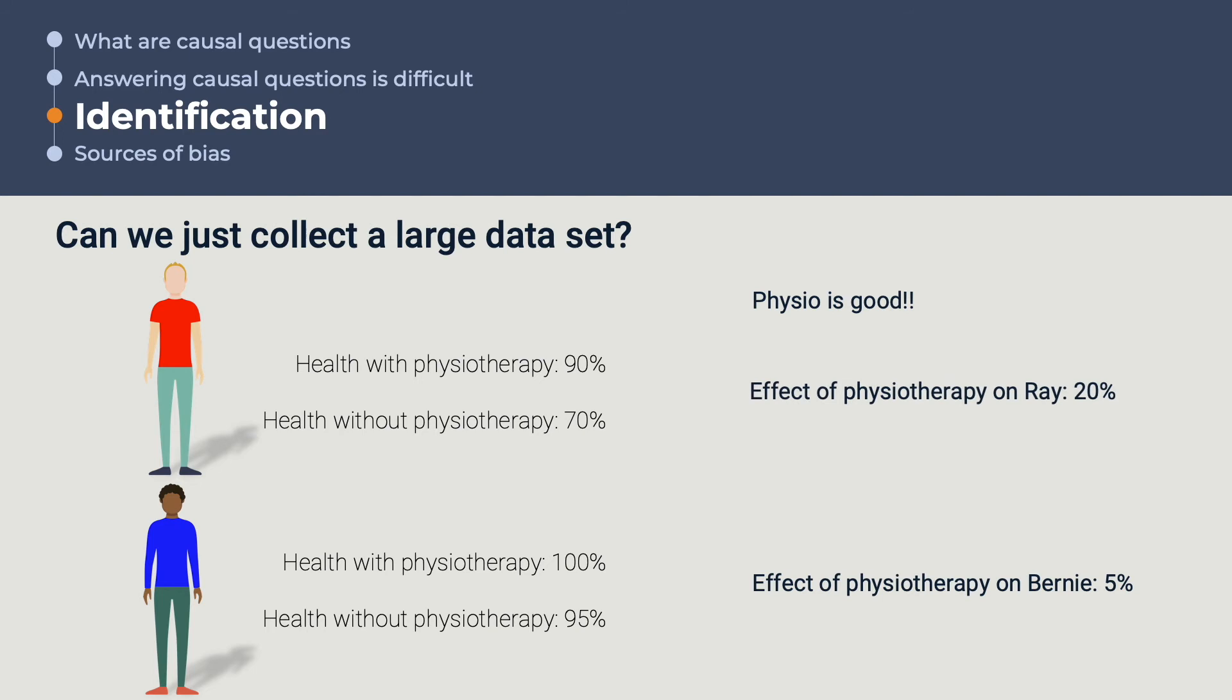What happens, however, is that in real life, Ray and Bernie will each decide on what to do, to book an appointment with a physiotherapist, or not. Physiotherapy is expensive, so while Ray has a great incentive to undergo treatment, Bernie does not. After all, in this tale, treatment will benefit Ray a lot, but it will only minimally benefit Bernie.